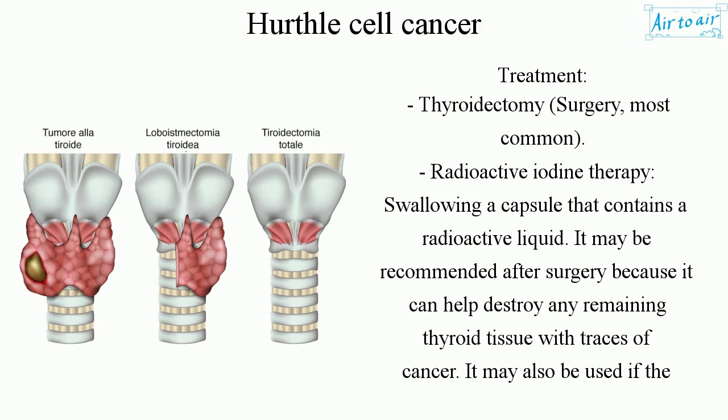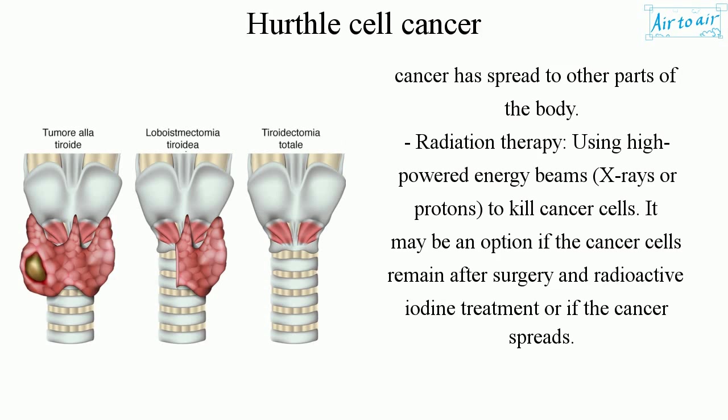Radioactive iodine therapy may be recommended after surgery because it can help destroy any remaining thyroid tissue with traces of cancer. It may also be used if the cancer has spread to other parts of the body. Radiation therapy uses high-powered energy beams, X-rays, or protons to kill cancer cells. It may be an option if cancer cells remain after surgery and radioactive iodine treatment, or if the cancer spreads.